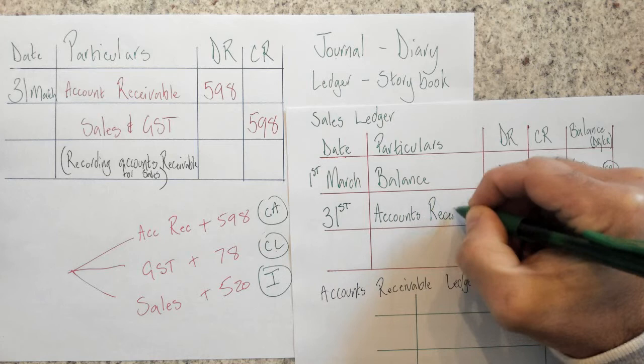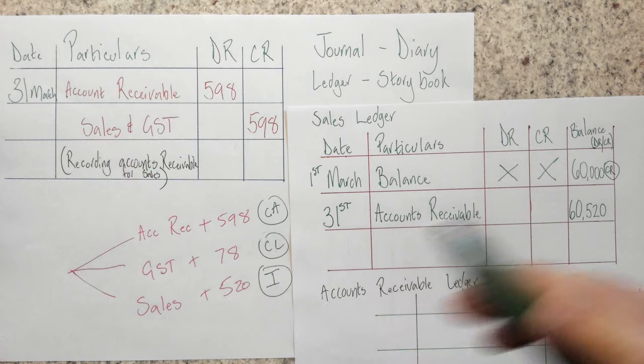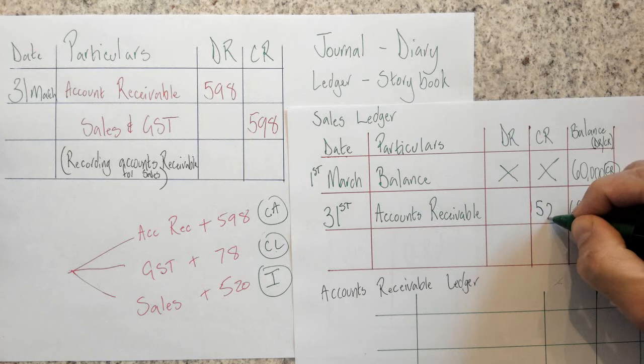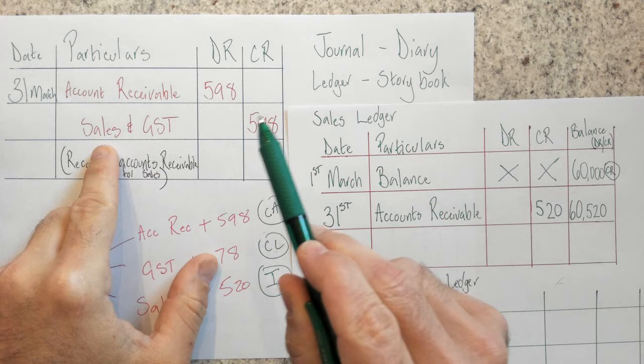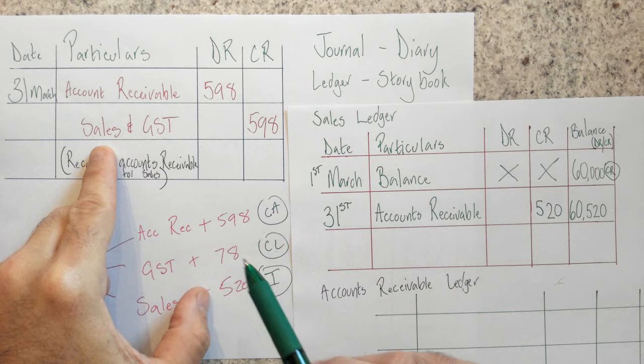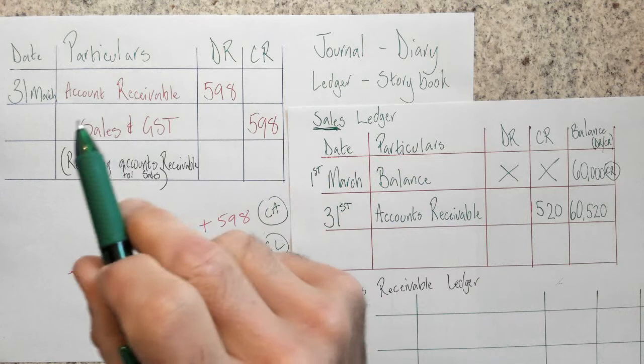My sales has gone up by 520. And I know that because of my trial balance again. That's gone from 60,000 to 60,000 plus 520. So I know that my final answer, and I'm going to work backwards here. Some people don't like to do this, but I think it's the way to do it. So 60,520 is going to be my final answer.